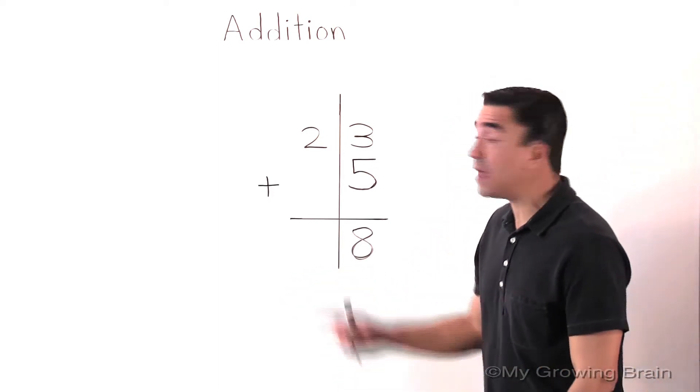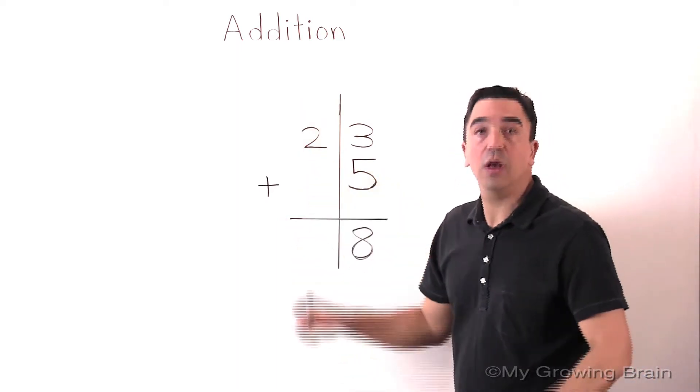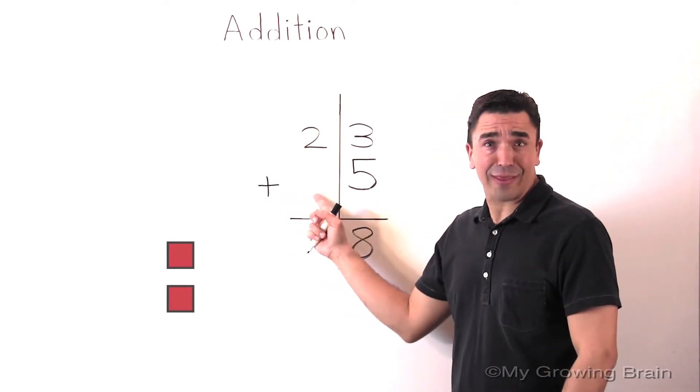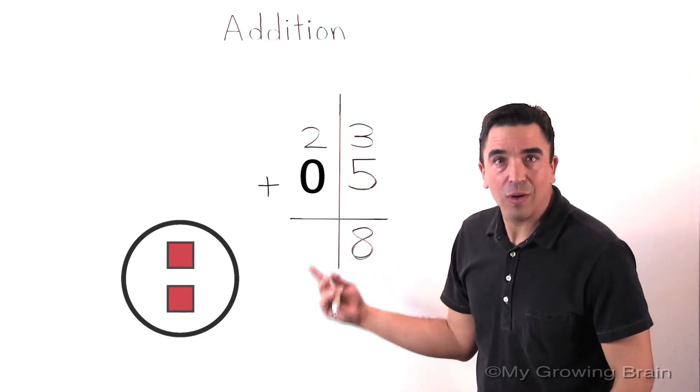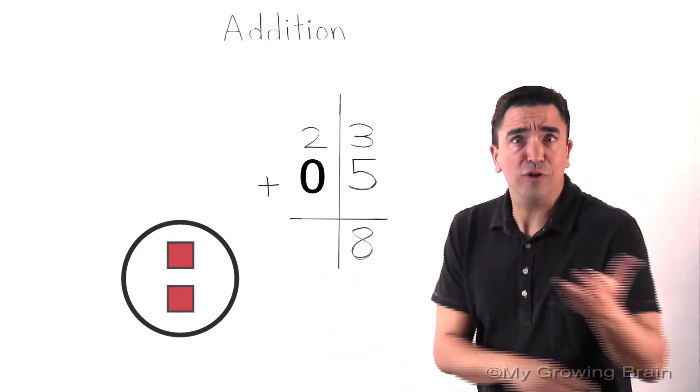Now, we move to the tens place. 2, 1, 2, plus nothing, or 2 plus 0. Well, 2 plus 0 is 2.